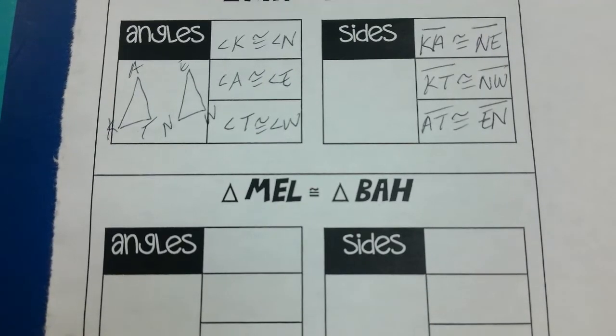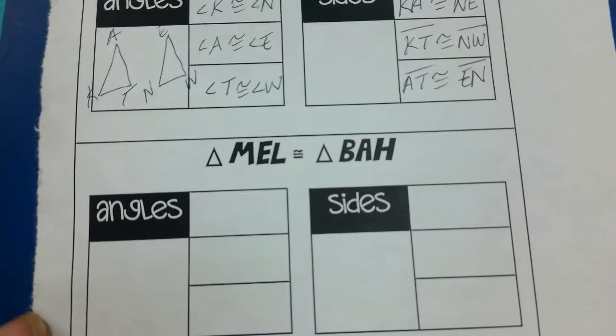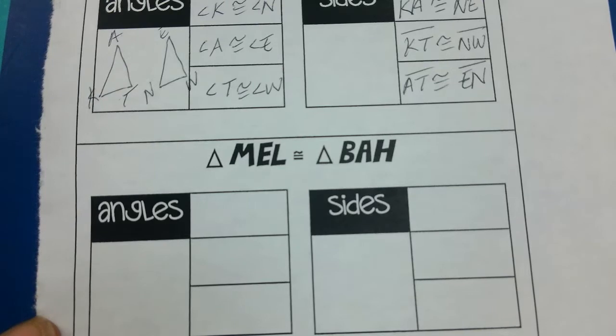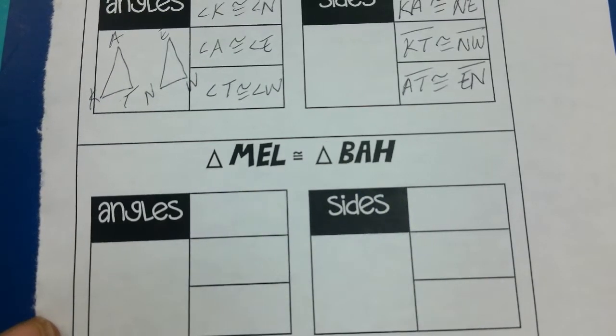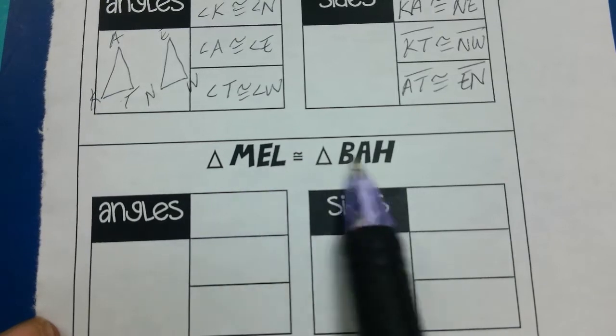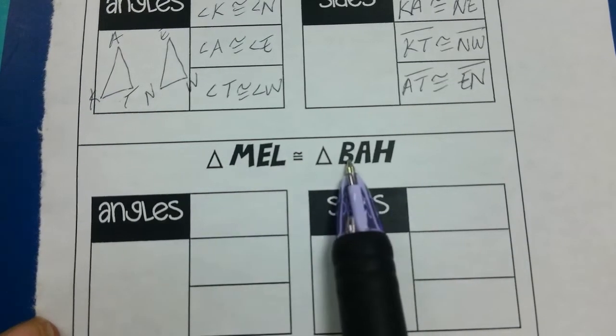So here's another example where you're doing the same thing, but I'm going to show you a different way of doing it. One way you can always do it is by drawing a picture, that's what I did above. But another way I can look and see what parts are corresponding is again how it's written. That's the reason why order matters.